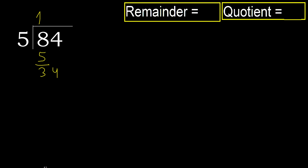Next, bring down the 4 to make 34. 5 multiplied by 7 is 35 — that is greater. 5 multiplied by 6 is 30 — not greater. So we use 6. Subtract: 34 minus 30 equals 4. There is no next digit, so we finish here.